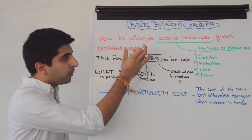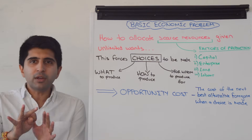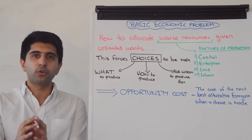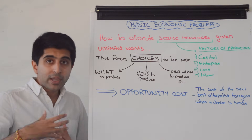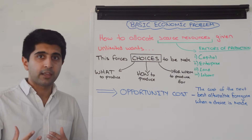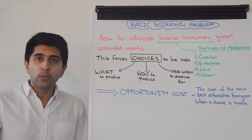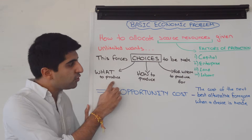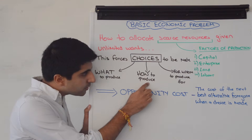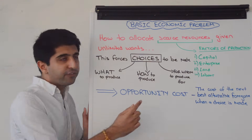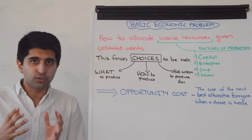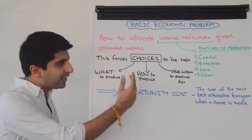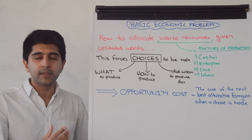Given this problem, there are three fundamental choices that need to be made about how we allocate our scarce resources. We need to make a choice of what to produce, how to produce it, and for whom to produce.